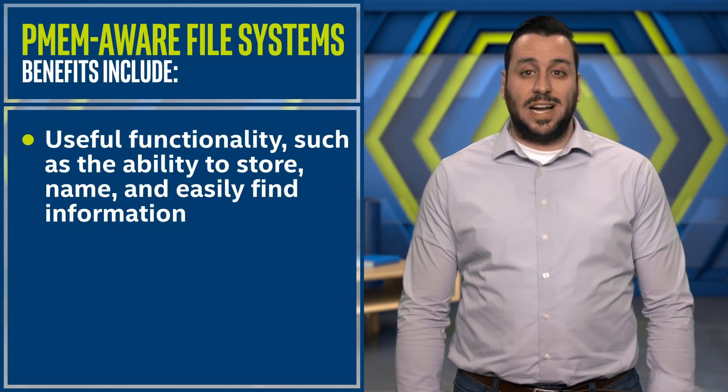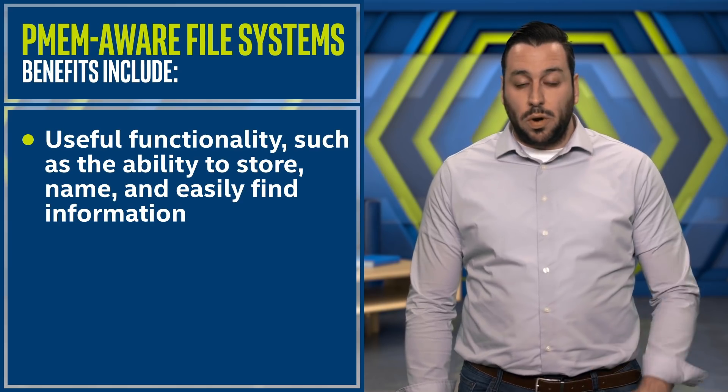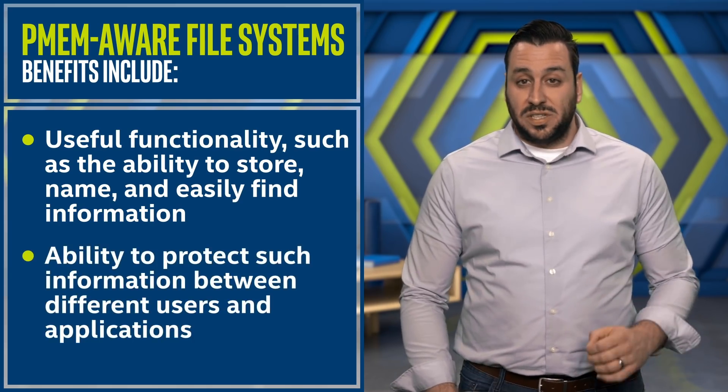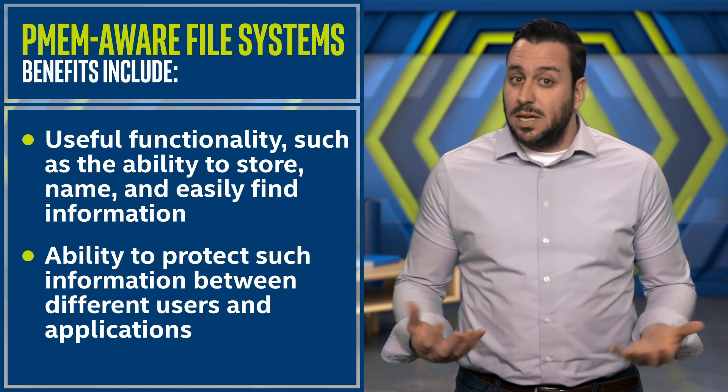Persistent memory-aware, or PMEM-aware, file systems are needed in order to use Intel Optane DC persistent memory in application direct, or App Direct, mode. The main reason is that file systems provide useful functionality, such as the ability to store, name, and easily find information, as well as the ability to protect such information between different users and applications. The difference lies in how data is read and written. In the case of PMEM-aware file systems, all data accesses go directly to the persistent media, bypassing any I/O caching done by the OS.